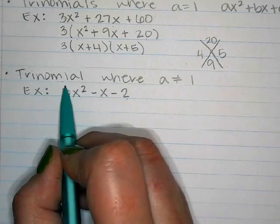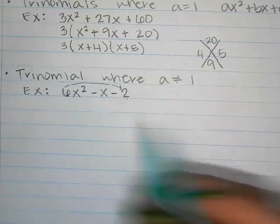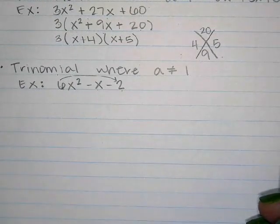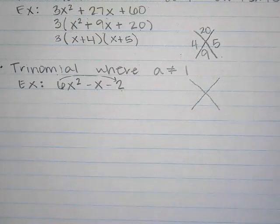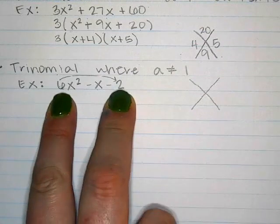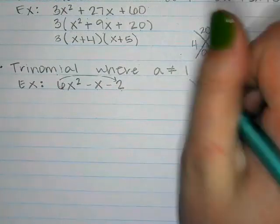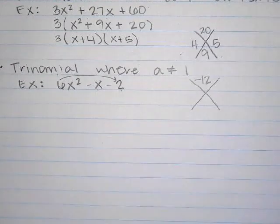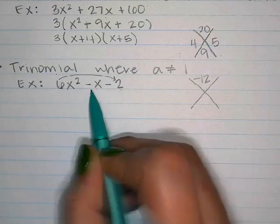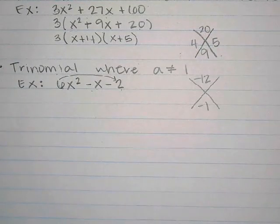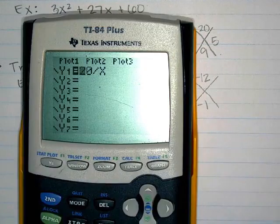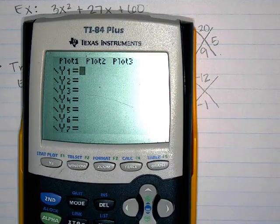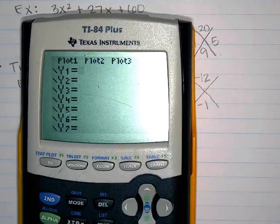So with this problem, we take the 6 and multiply it by negative 2. We're looking for two numbers that multiply to 6 times negative 2, which is negative 12, and add to negative 1.